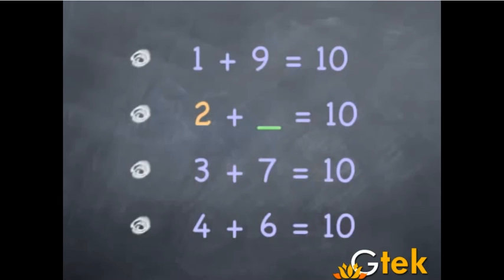The ascending order is 1, 2, 3, 4 and the descending order is 9, then 8, 7, and 6. So the answer is 10. So the answer for the second one is 2 plus 8 equals 10.